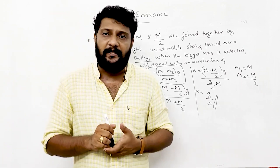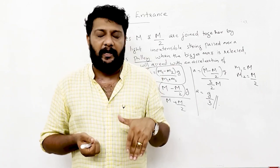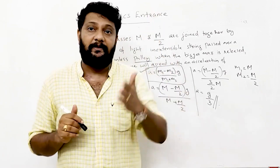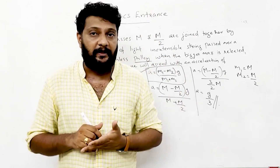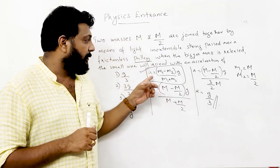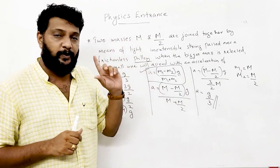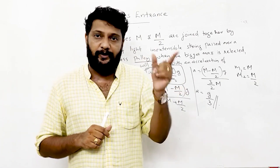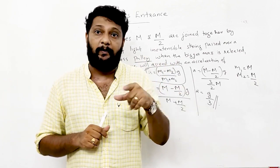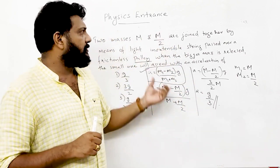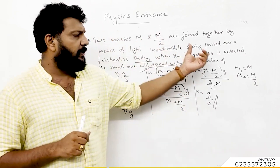So a = (M1 - M2) / (M1 + M2). With M1 = M and M2 = M/2, a = (M/2) / (3M/2) = g/3.